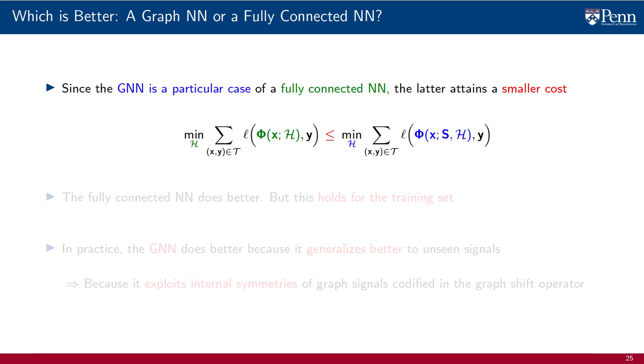This is because the optimization set of the neural network includes the optimization set of the GNN. Whatever transformation can be implemented with a GNN is a particular case of a transformation that can be implemented with an FCNN.